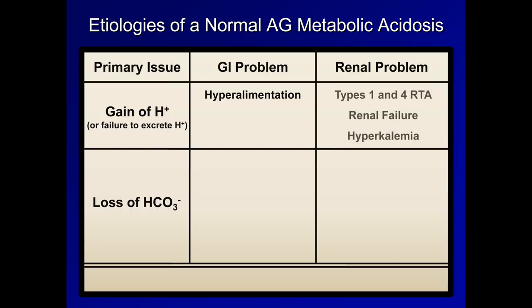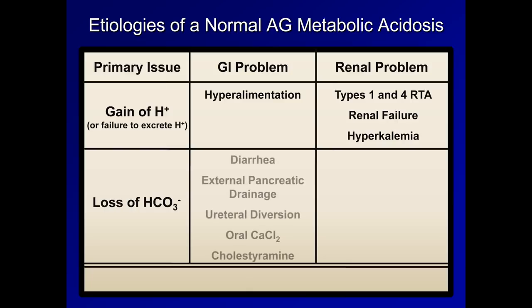there can be buildup of ammonium ion and other acids that exceed the capacity of the kidneys to handle. Specifically in the kidneys, there are two types of renal tubular acidosis, or RTA, which along with renal failure result in a gain of hydrogen, primarily through the kidneys' inability to excrete it normally. Hyperkalemia can also lead to a relative gain of hydrogen through two different mechanisms. Loss of bicarbonate in the GI tract is most commonly the result of diarrhea, but can also be due to surgical procedures such as external pancreatic drainage and ureteral diversion. Oral calcium chloride can be converted to calcium carbonate in the gut lumen, providing a pathway for intestinal loss of bicarb.